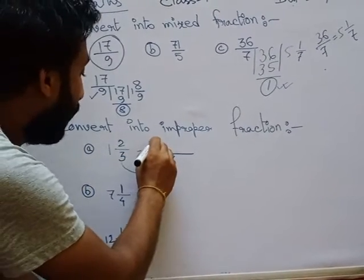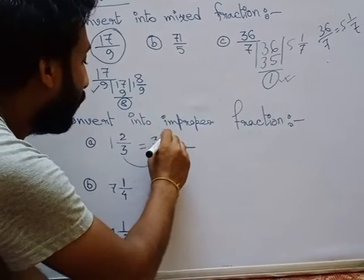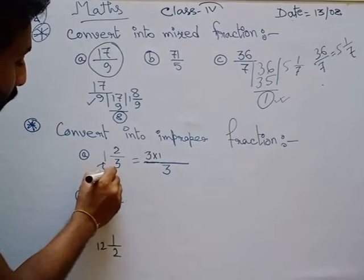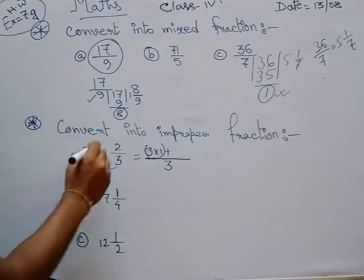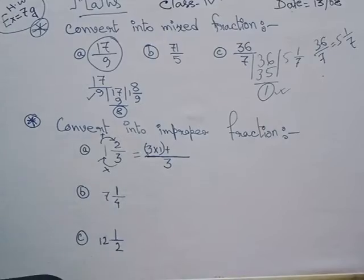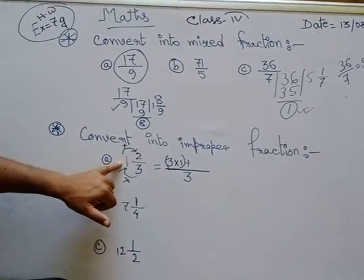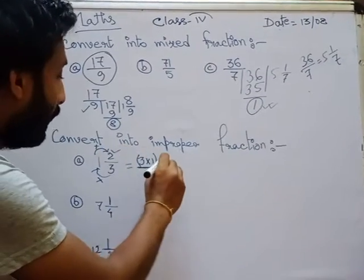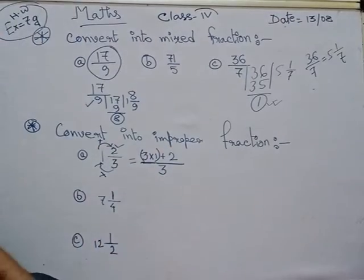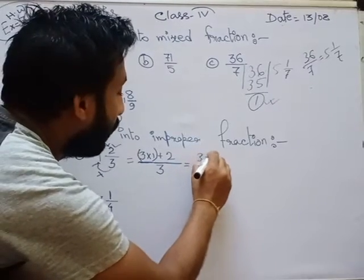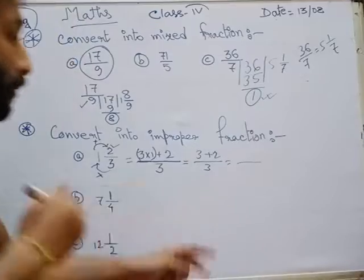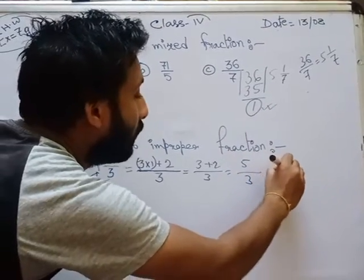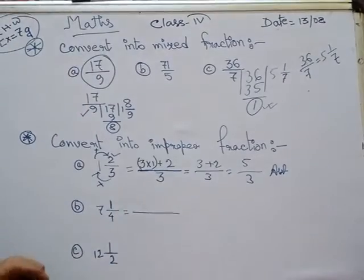Now, what we have to do — at first we will multiply the denominator with the whole number, then after that we should add the numerator. At first we will multiply the denominator with the whole number, after closing the bracket we should write the addition sign, then we will write the numerator. So three 1s are 3, plus 2, by 3 — so 3 plus 2 equals 5 by 3.